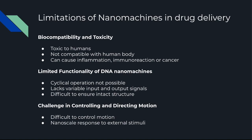The limited functionality of nanomachines creates an obstacle in their widespread use. DNA nanomachines cannot operate cyclically due to irreversible switching. Most DNA nanomachines lack variable input and output signals, which restricts their diverse applications. It is difficult to ensure the intact structure of DNA nanomachines, since most of them consist of several DNA strands. A big challenge is achieving directional motion, as gaining control over molecular-level motion is necessary to produce functional property changes and perform physical tasks.